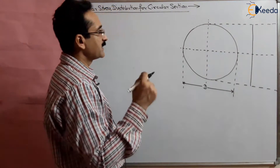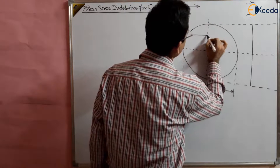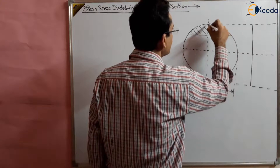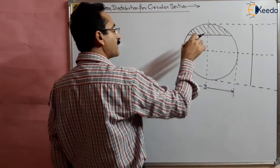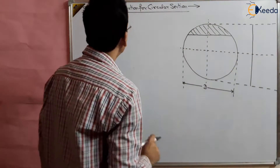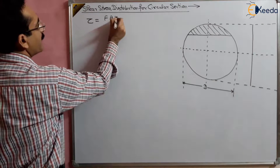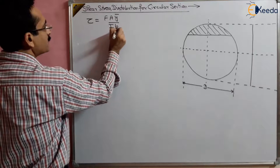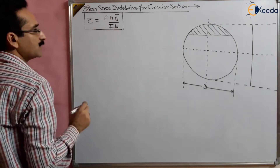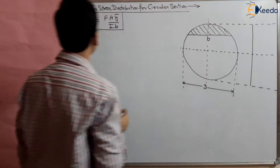As usual, let us take a small section from the top fiber. We will first find out the shear stress in this part, and that will be valid for the entire section. The formula we know is: tau is equal to F·A·ȳ divided by I·B. This we have proved in our previous lectures. Here B is the width of this part.